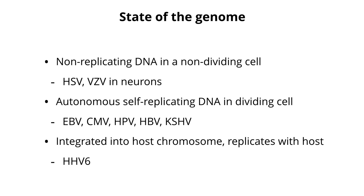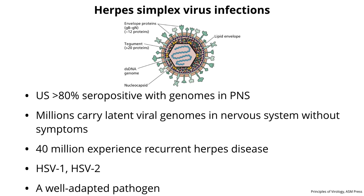The state of the genome varies among the different herpes viruses we'll talk about. For herpes simplex virus and varicella zoster virus, the DNA is not replicating — it's in a non-dividing cell, a neuron, which doesn't divide, so the DNA doesn't have to divide either. In some cases the DNA is an autonomous self-replicating DNA in a dividing cell, existing as an episome — this applies to Epstein-Barr virus and cytomegalovirus. Human herpesvirus 6 has an interesting case where the DNA at least in a fraction of infected people integrates into the host chromosome, so it replicates with the host, much like a provirus, but not in every host.